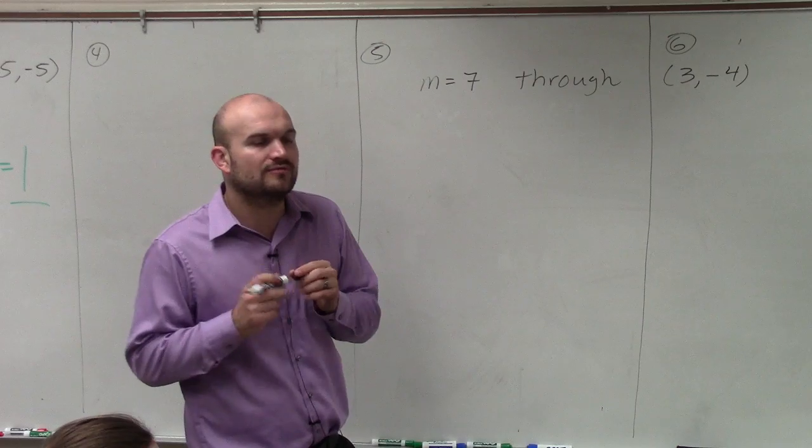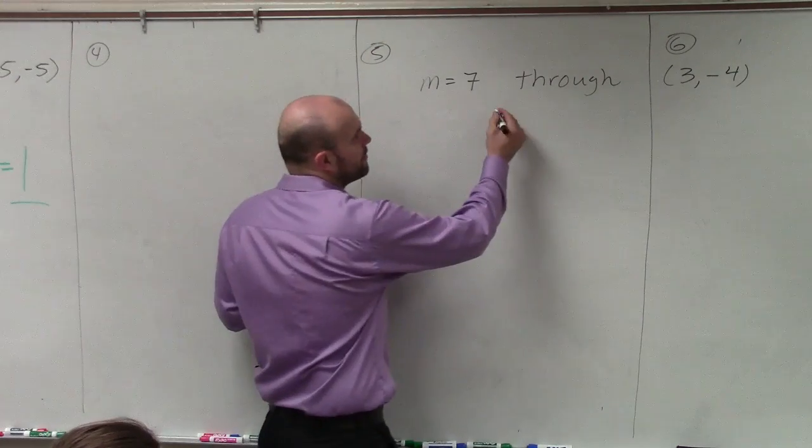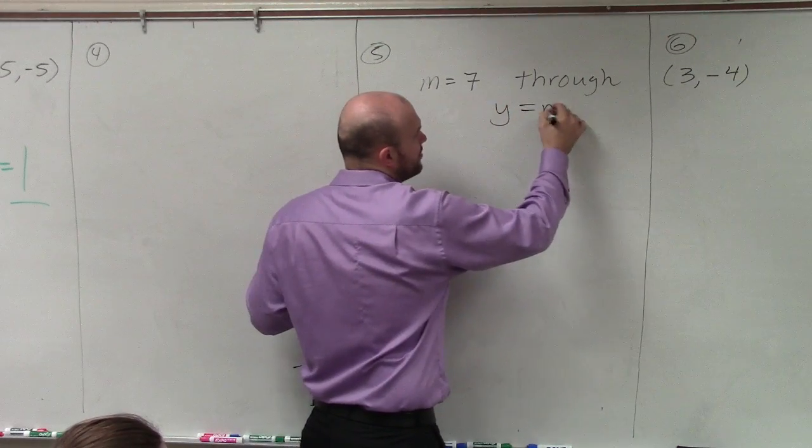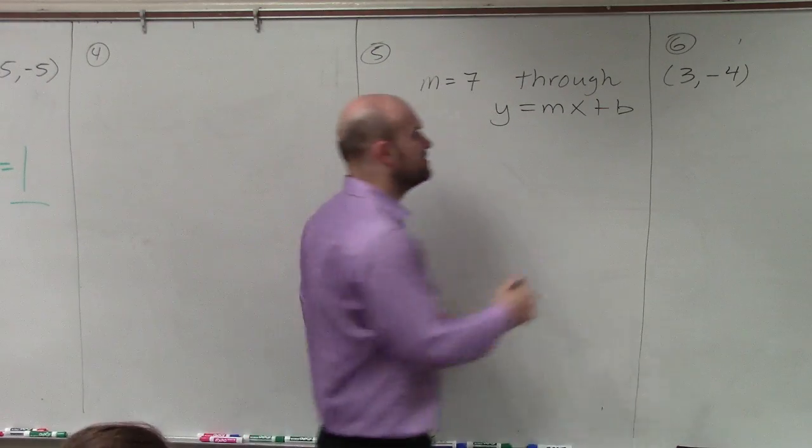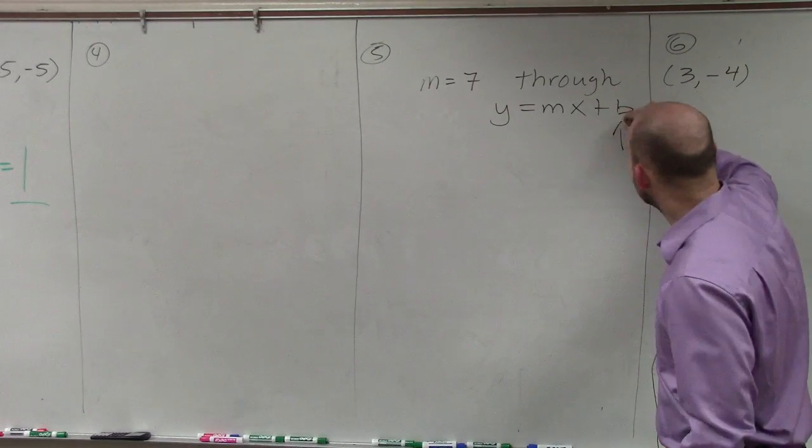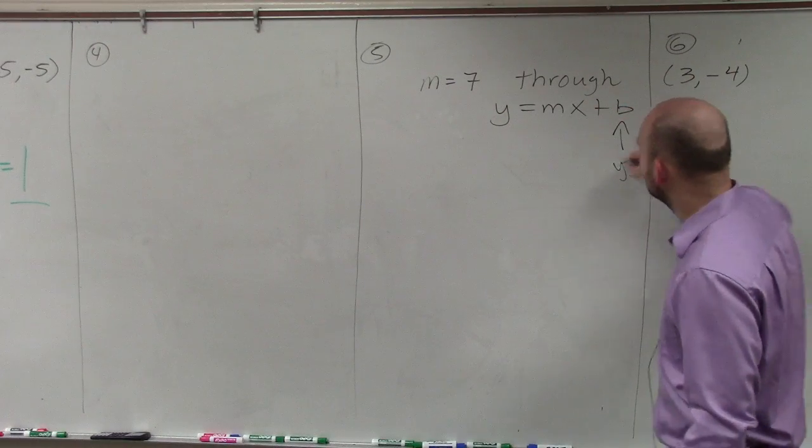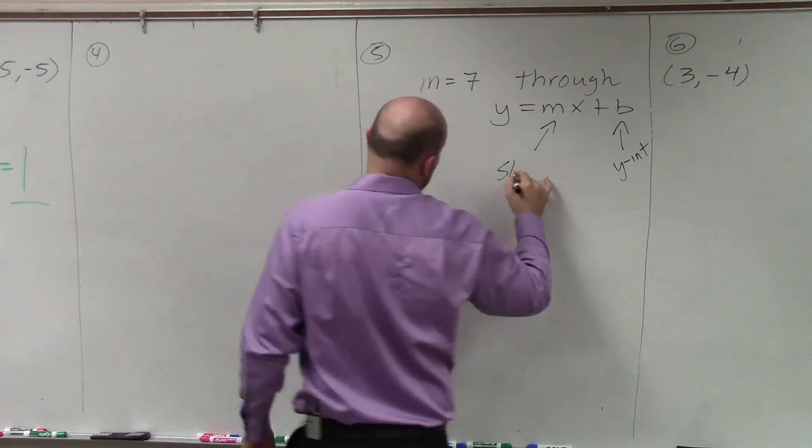When we're writing the equation, what we're looking for is an equation that is going to be in slope-intercept form. And when graphing, if you guys remember slope-intercept form, the b represents our y-intercept and m represents our slope.